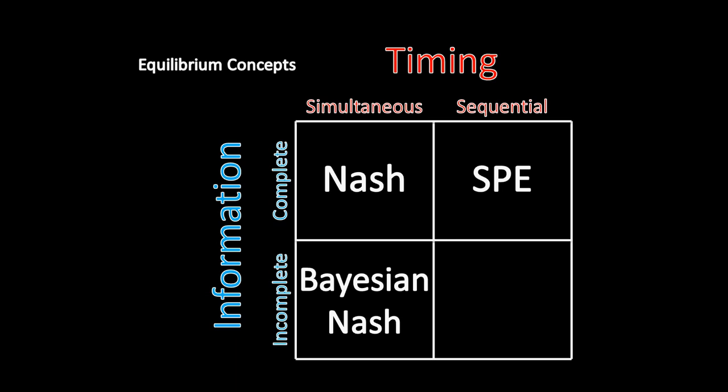You might remember this figure from before. It lists equilibrium solution concepts by the timing and information in a game. We started our exploration of game theory with simultaneous move games of complete information, where the appropriate solution concept was Nash Equilibrium. Then we transitioned into sequential games, where players take turns and have seen previous moves, and we saw that Nash Equilibrium is insufficient, so we switched to subgame perfect equilibrium. Then we looked at simultaneous move games with incomplete information, and again Nash Equilibrium was not sufficient, so we introduced Bayesian Nash Equilibrium.